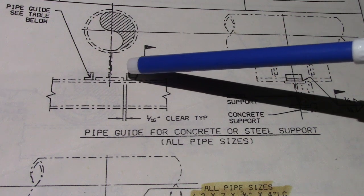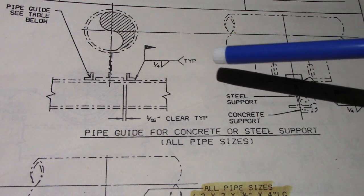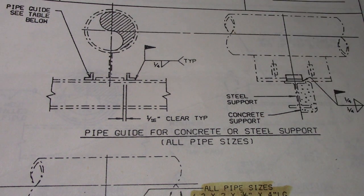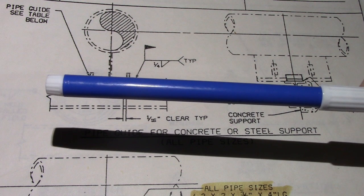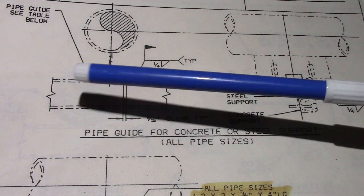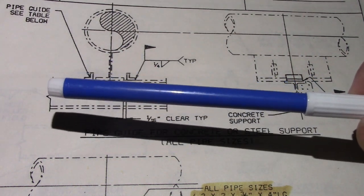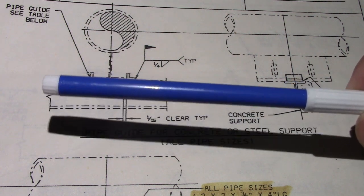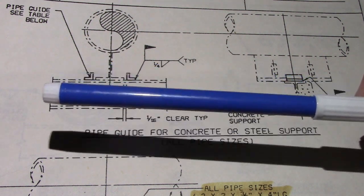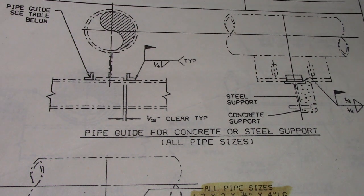This is the clearance both sides, so you have both sides at 3/16 so that the pipe can move like this. If they have no gap, the stress of the pipe is coming there. If they have clearance, it's just moving left and right.